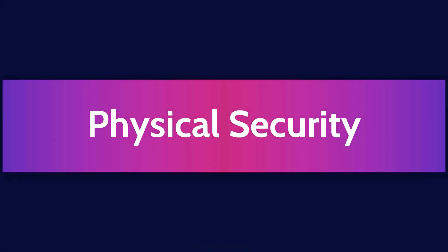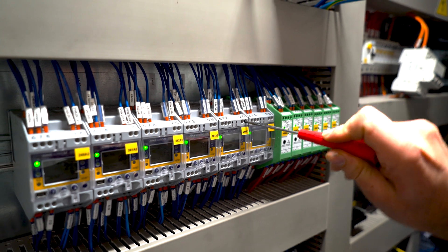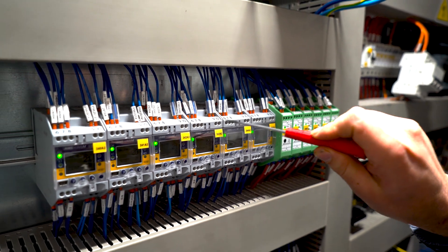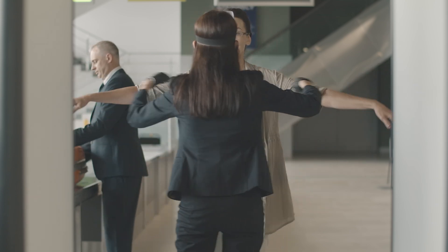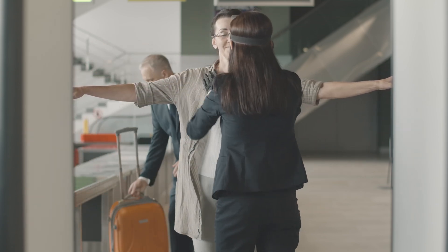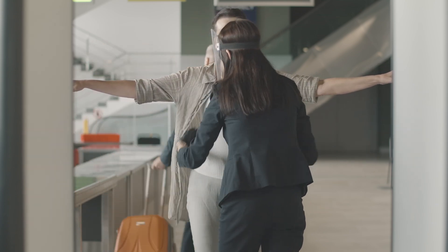Physical security is critical in achieving confidentiality, integrity, and availability. There's an expression I really like: if you can touch the box, you own the box. In other words, if an attacker can gain physical access to a device like a firewall or a server, they can easily gain control of the device. This is because our equipment has all sorts of bypass controls built into it, like factory reset buttons. We need to carefully control who can gain access to our facilities, specific rooms, and certain equipment.